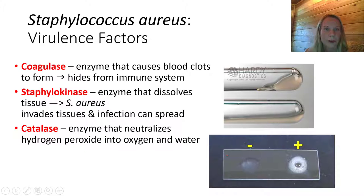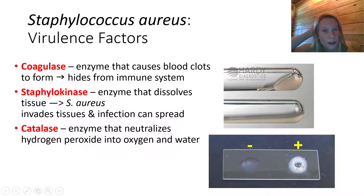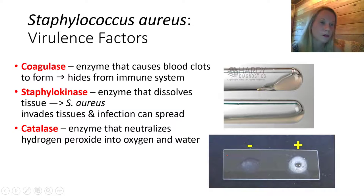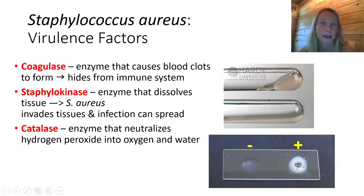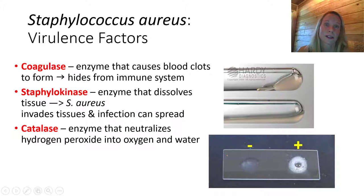Coagulase is an enzyme that clots your blood. This would be an advantage for bacteria because if they can form a blood clot, they can hide within it and be protected from the immune system. Usually you do Lab 27 in conjunction with this lecture — I'm assigning the lab online this week. You'll be presented with these diagnostic tests, which is where we start talking a lot about how we can differentiate different strains of bacteria based on enzymes that they have.